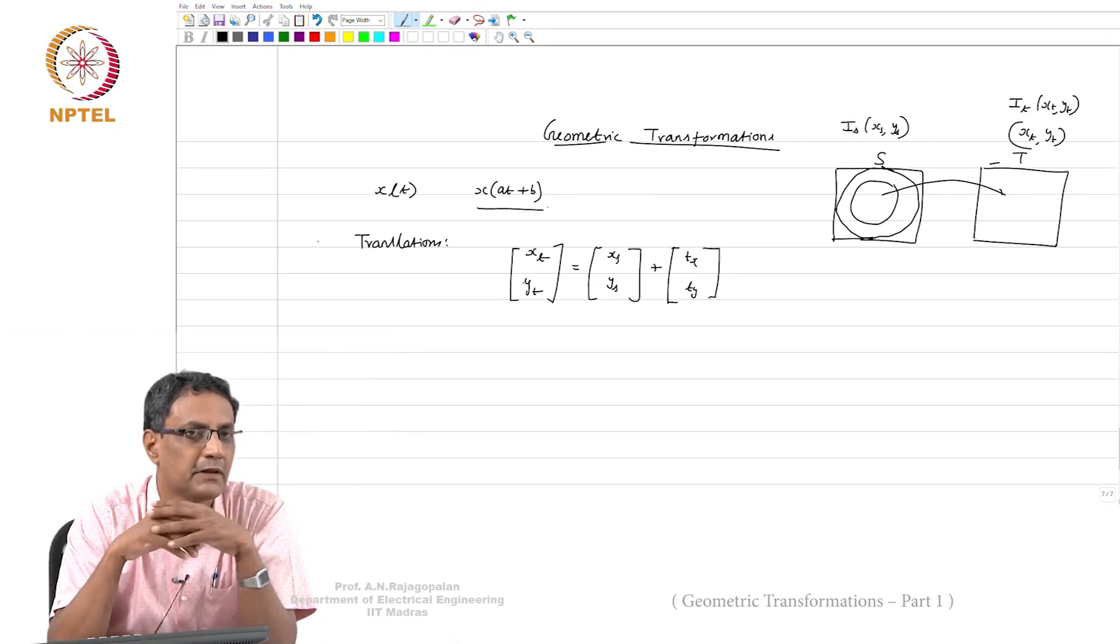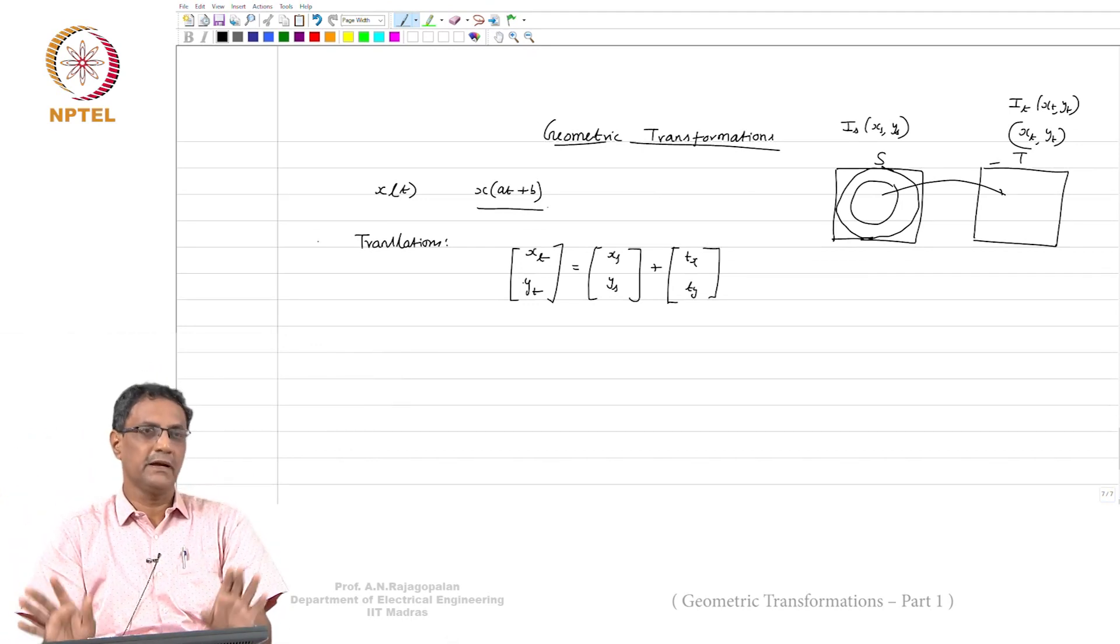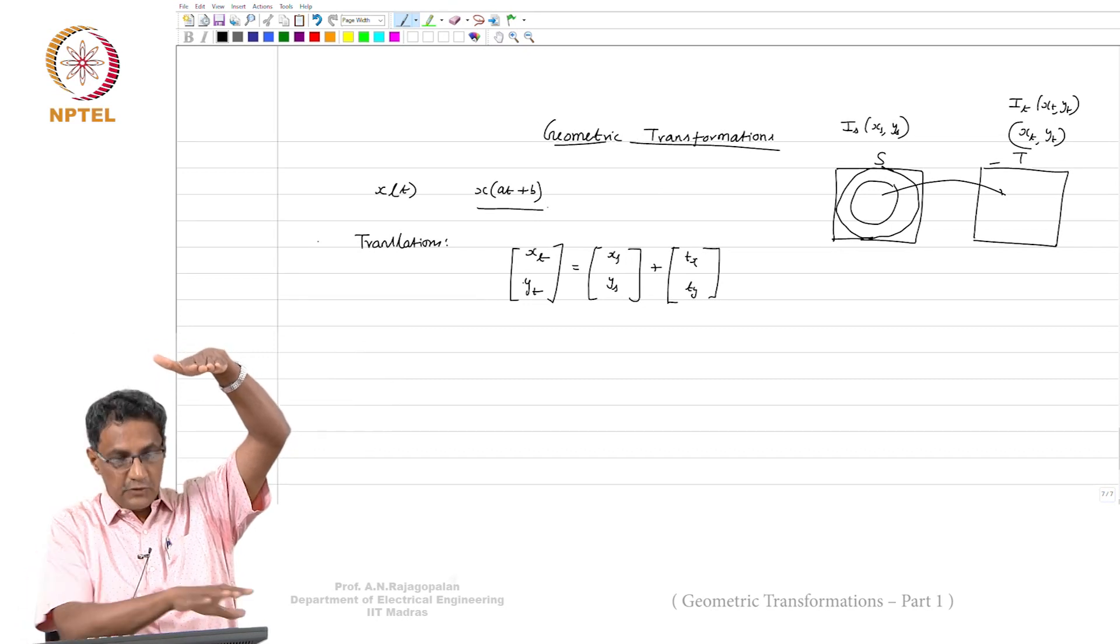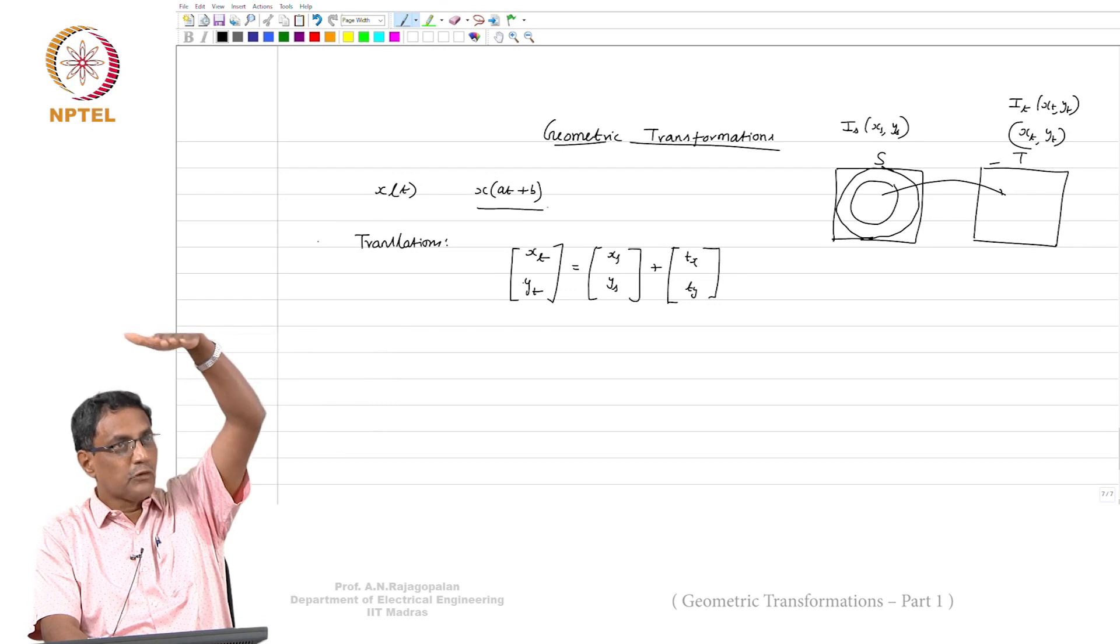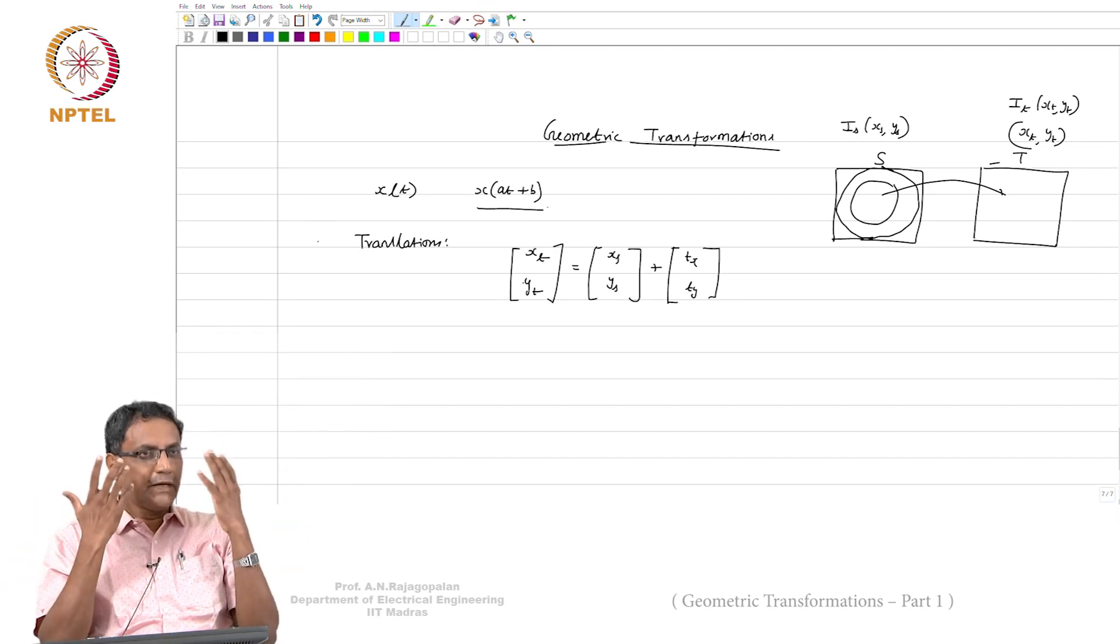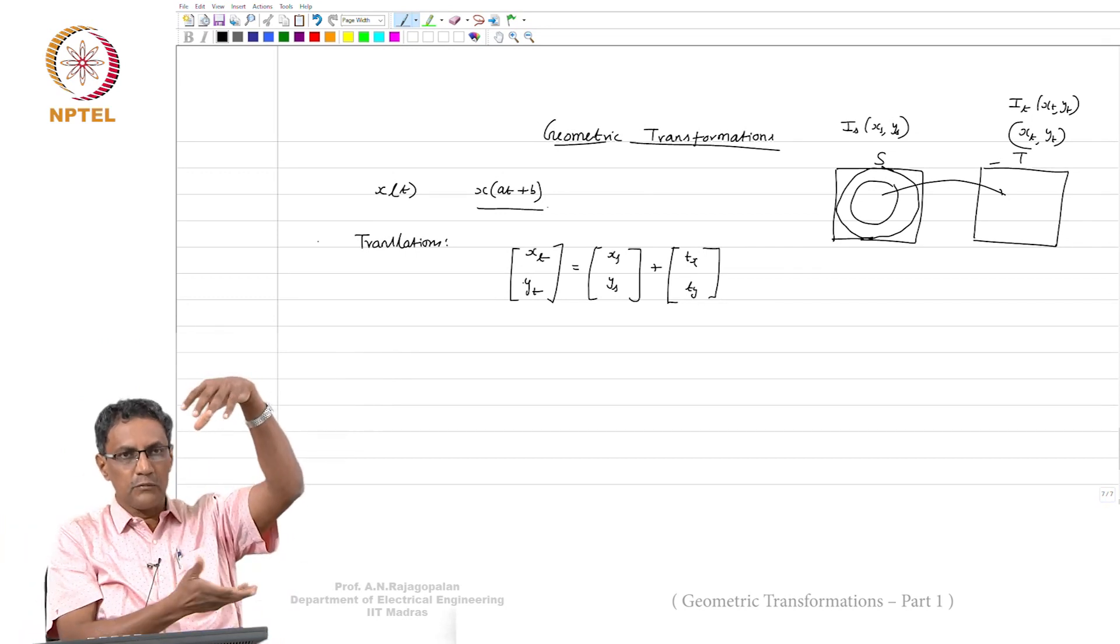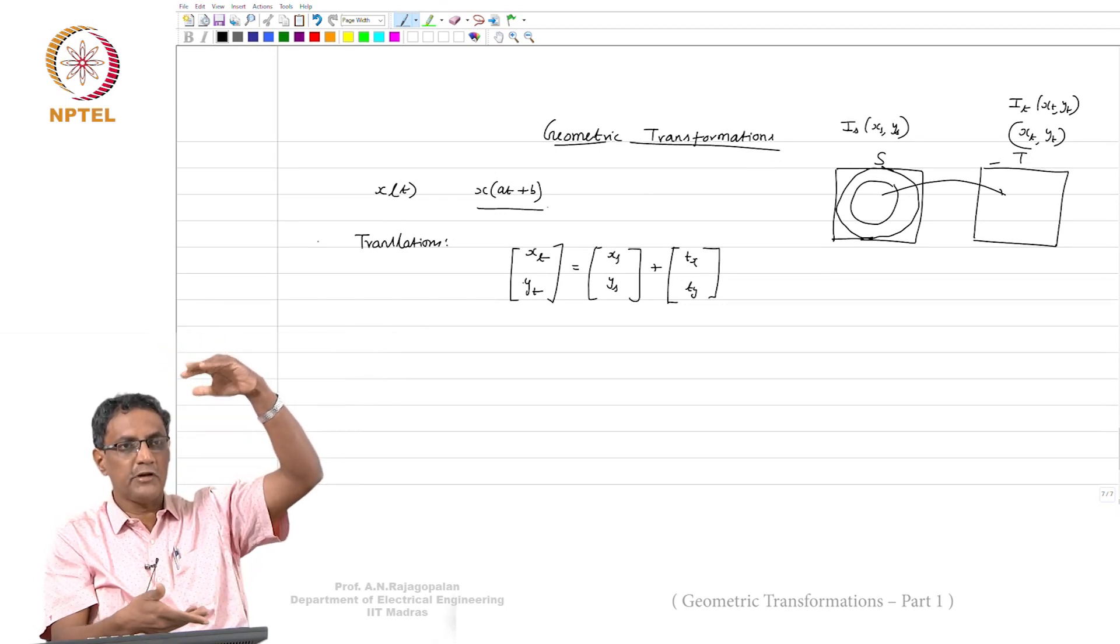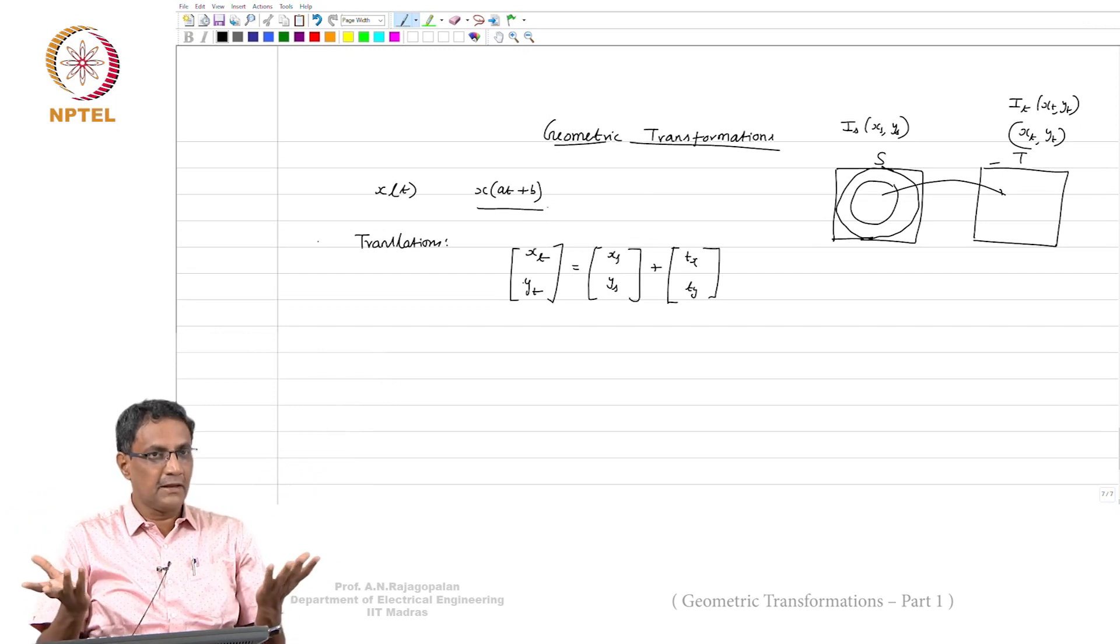The whole idea hinges on being able to write that one linear transformation. If there is more than one which is needed, then it is no longer the kind of thing that you would like. Which is why these translations, rotations and scaling that you are familiar with is the most simplest of all. Like when there is a global translation, all the pixels just shift by tx and ty.